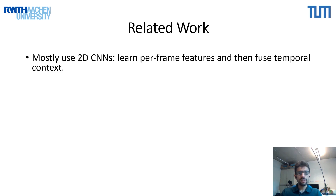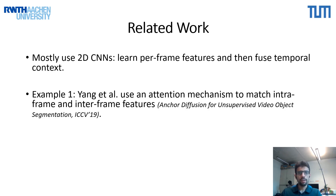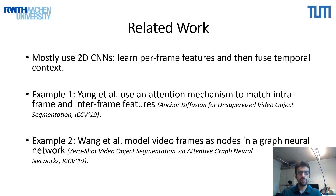This problem has been extensively studied over the years, and existing works typically involve using 2D CNNs. Features are first learned for each image frame in the video, and then various techniques are used to fuse temporal context to obtain the final segmentations. For example, a recent work uses attention to match features within and across multiple image frames, whereas another work models video frames as nodes in a graph neural network to learn temporal context.